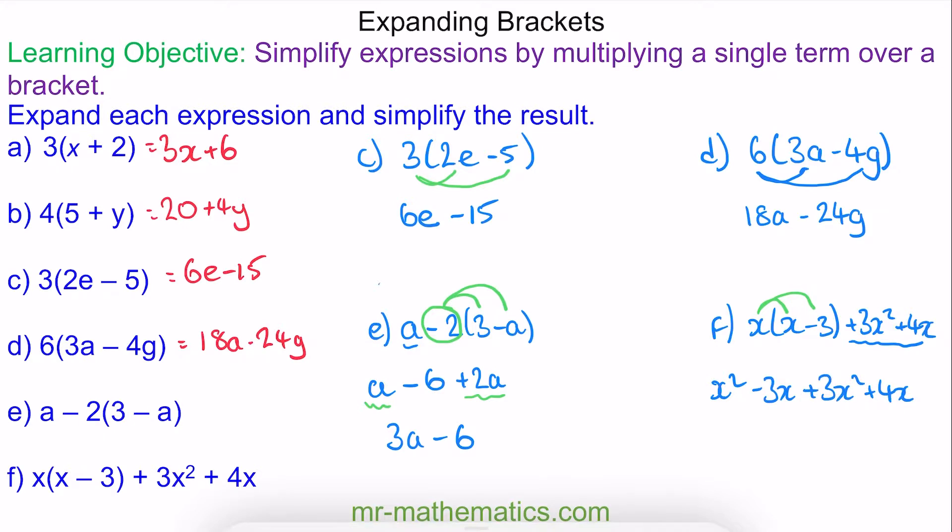And now we can collect the like terms, where we have 1 plus another 3x squared, which is 4x squared. And negative 3x plus 4 is positive x.